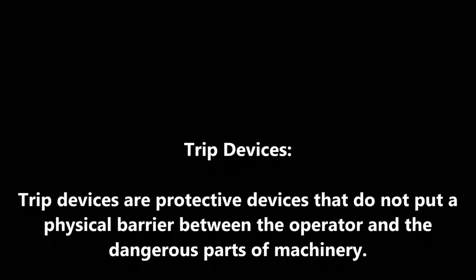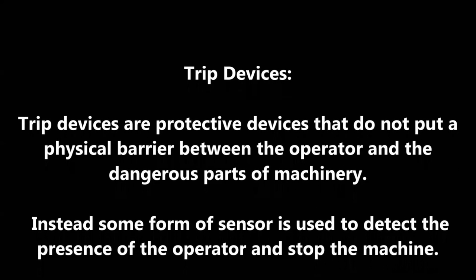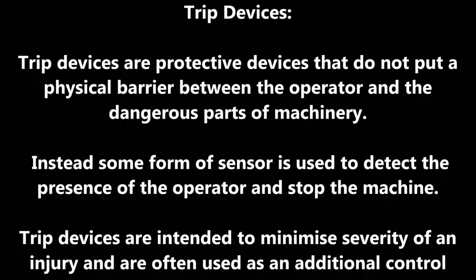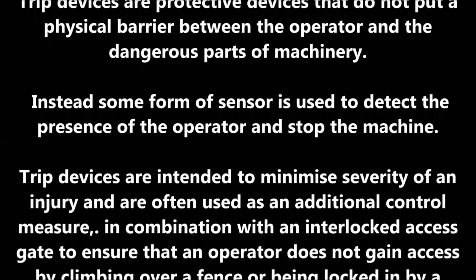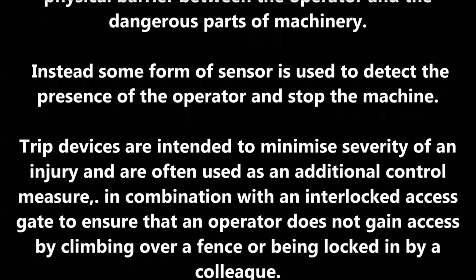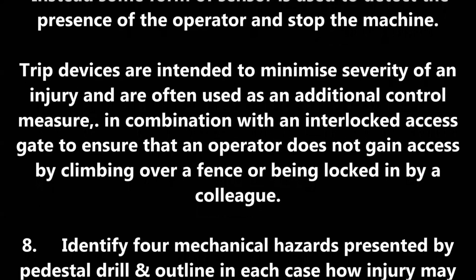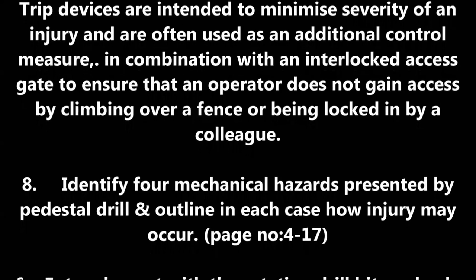Trip devices are protective devices that do not put a physical barrier between the operator and the dangerous parts of machinery. Instead, some form of sensor is used to detect the presence of the operator and stop the machine. Trip devices are intended to minimize the severity of an injury and are often used as an additional control measure, in combination with an interlocked access gate, to ensure that an operator does not gain access by climbing over a fence or being locked in by a colleague.